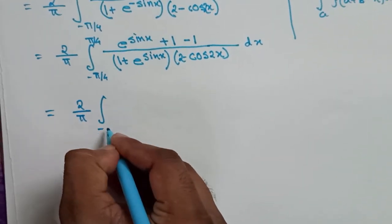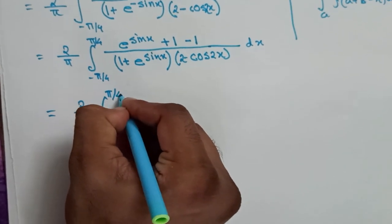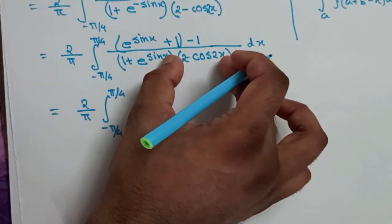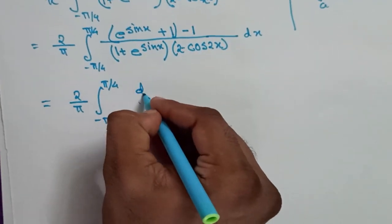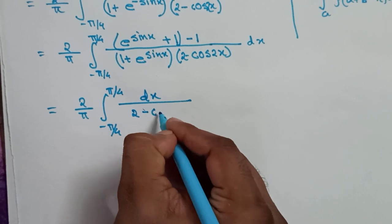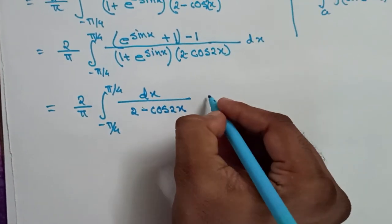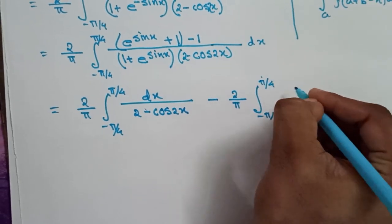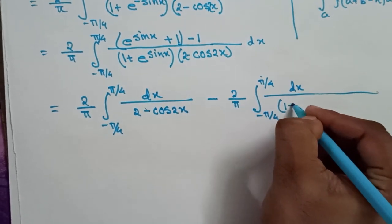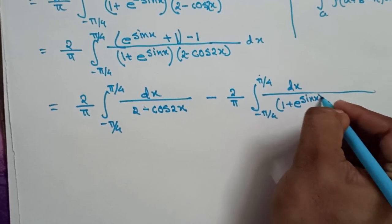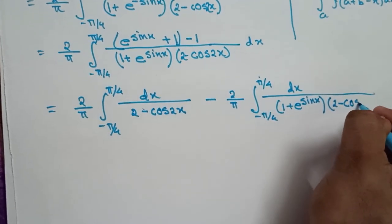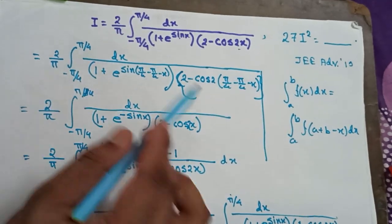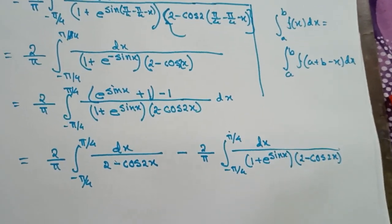2/π remaining as it was, -π/4 to π/4. If we take the first portion and then the second portion, then for this portion this one will be cancelled out, so it will remain with 2 - cos 2x. The rest of the portion is 2/π times -π/4 to π/4 dx, 1 divided by (1 + e^(sin x)) times (2 - cos 2x). This is nothing but the given integral, so it is actually I.